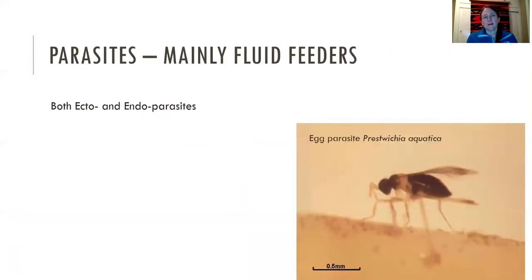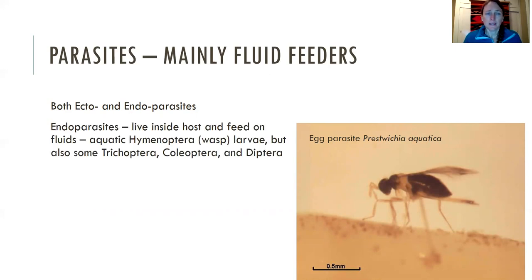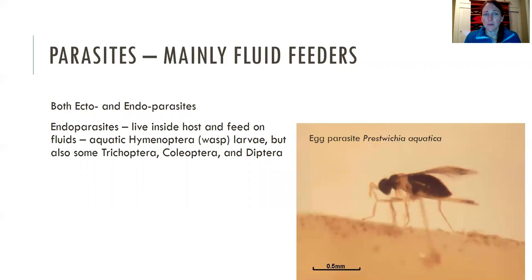Parasites are kind of similar to predators in that they're feeding on a live animal, but they tend to not kill their host — often they're feeding on fluids. There are both ecto- and endoparasites in the aquatic insect world. Endoparasites live inside the host and feed on fluids. Some examples would be aquatic hymenopterans, which are wasps and bees. This little tiny wasp larva preys on eggs and eats egg fluids. There are also some endoparasitic trichopterans, coleopterans, and dipterans.